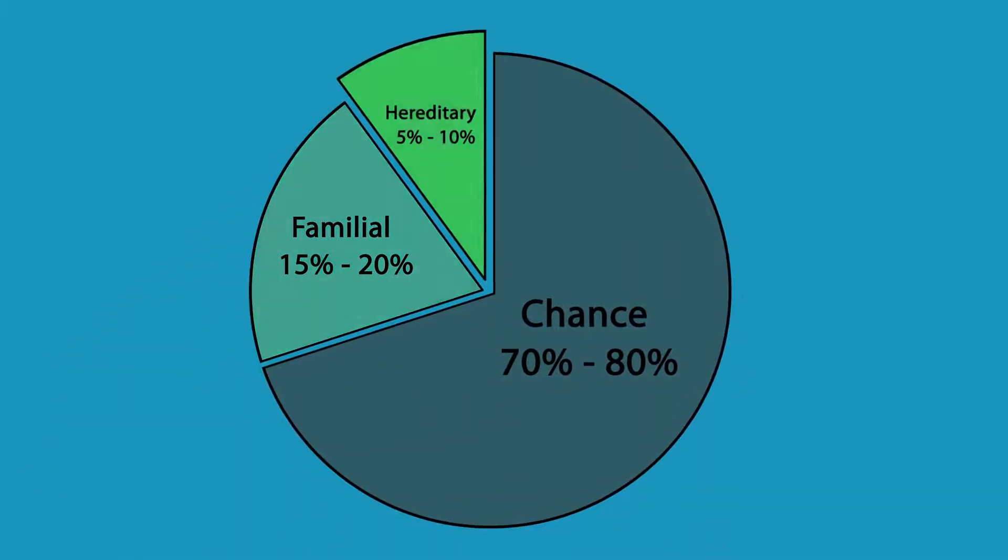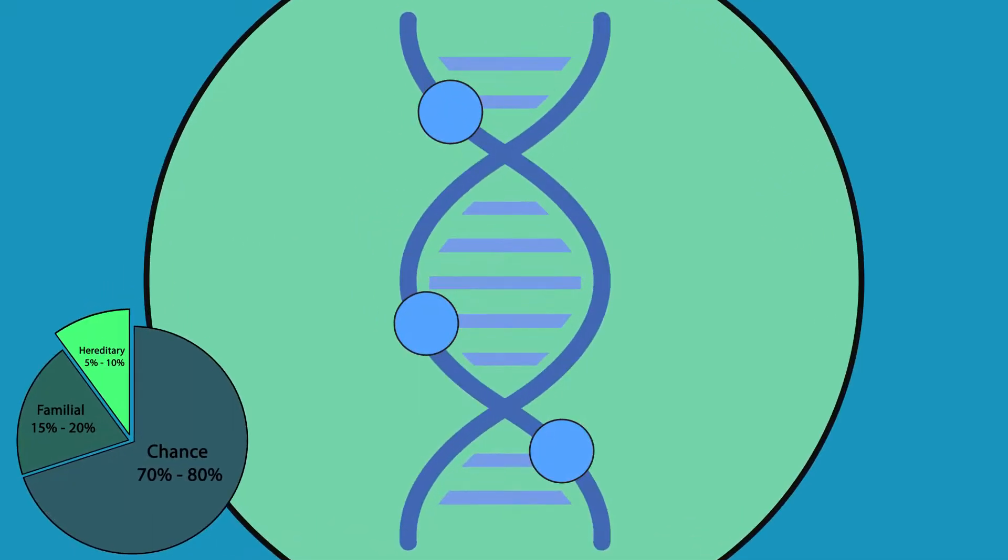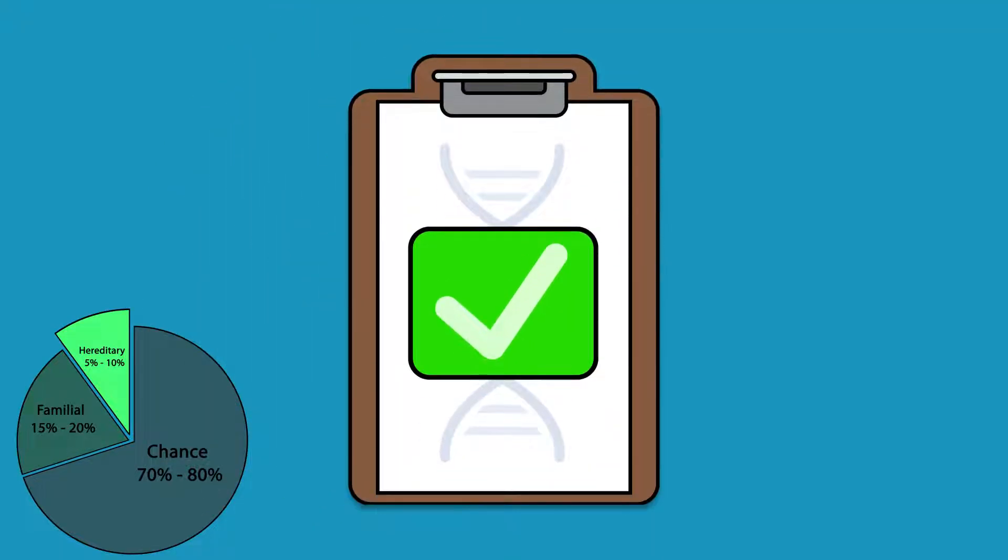Only 5 to 10% of cancers have a hereditary cause. These cancers happen because of a gene that is not working properly and can be passed along in a family. Genetic testing can be used to find out if the cancer in your family has a hereditary cause.